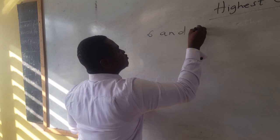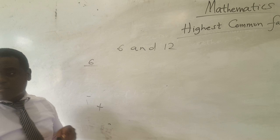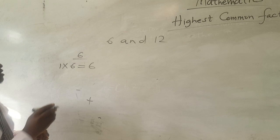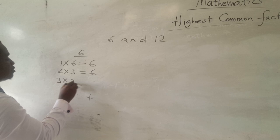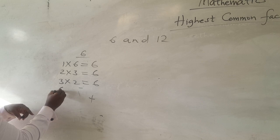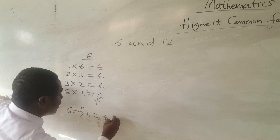So we are going to look at the highest common factor of six and twelve. Let's look at the factors of six. One times six equals six. Two times three is also equal to six. Three times two equals six. Six times one is also equal to six. So the factors of six are one, two, three, and six itself.